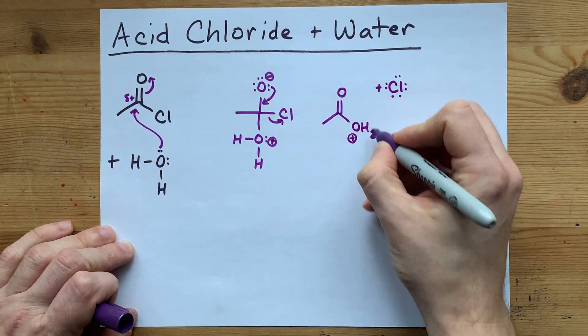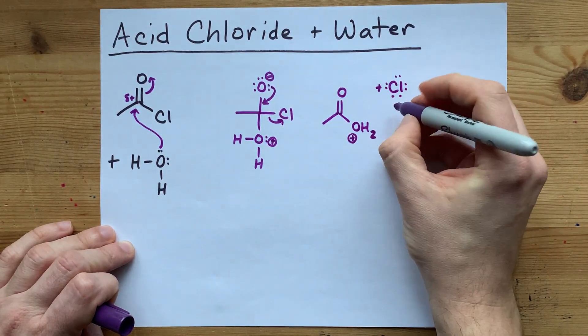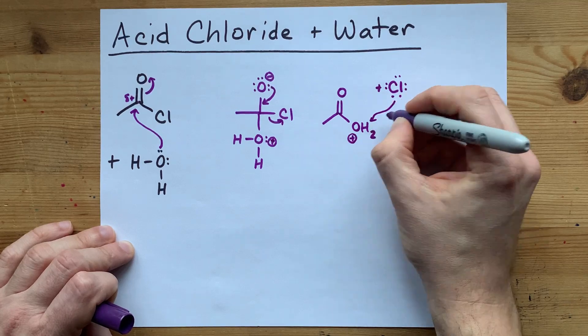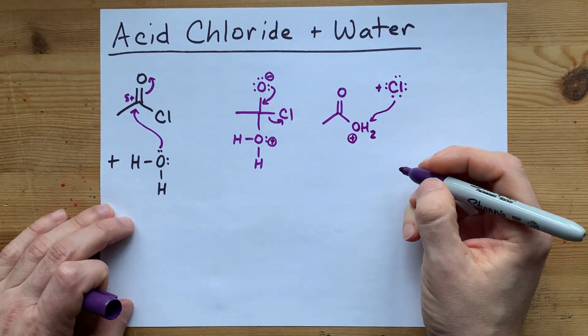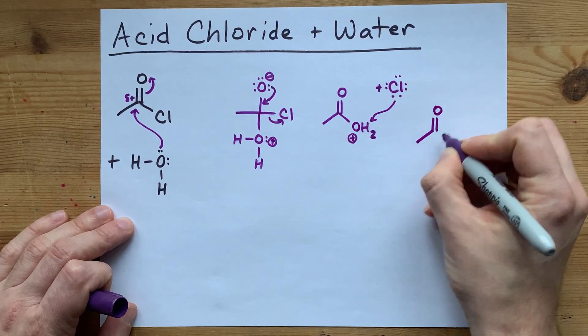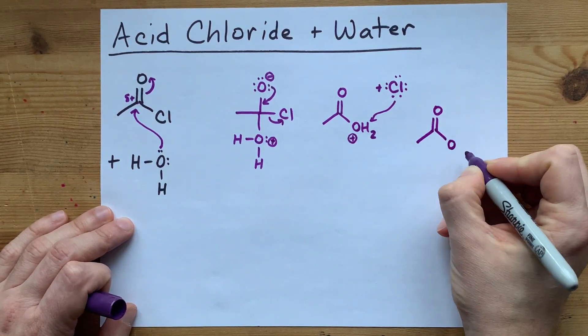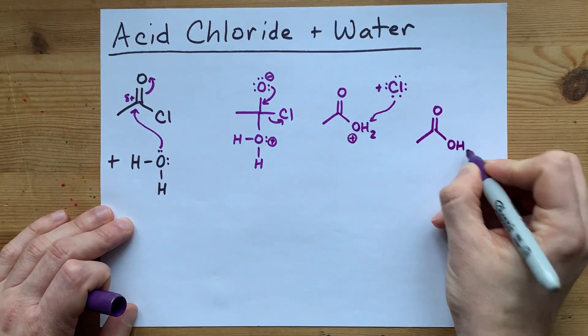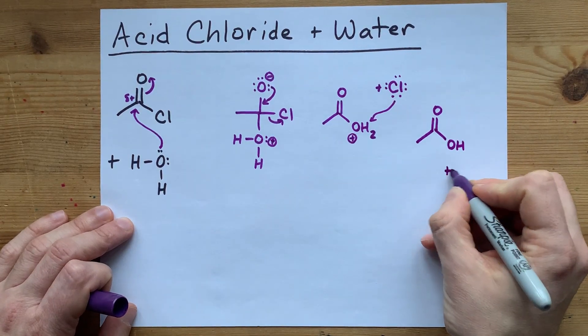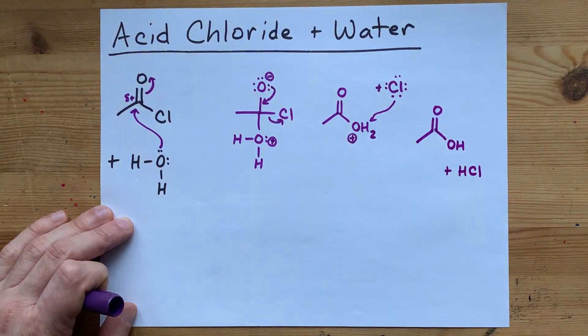I probably would have been better if I'd have shown both these H's separately. This chlorine is going to come in and take one of those. So you end up with the carboxylic acid, and by that I mean the oxygen from water and one of the hydrogens from water, along with an HCl particle.